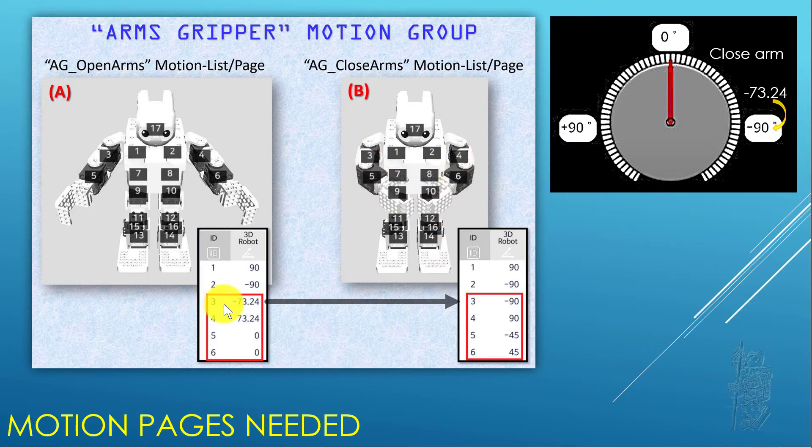If you concentrate on, for example, actuator number 3 only, open means it's set at position minus 73.24 degrees, close means it's minus 90 degrees. So putting the servo number 3 here, minus 73.3 is about here, minus 90 is here. So to close the arm, you have to move the actuator number 3 clockwise.